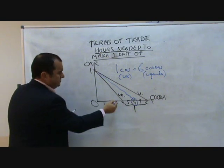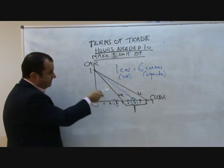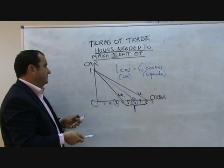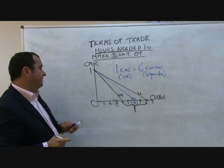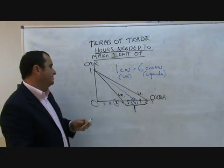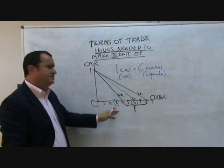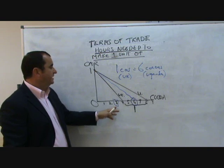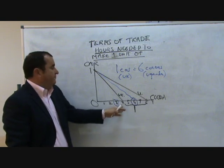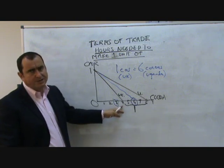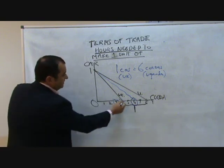If one side wanted the price to be where one car gets only three units of cocoa, that might suit Uganda making cocoa — they'd love to get a car for every three cocos they sell. But Britain wouldn't accept this. Britain would say: we're not giving away one of our cars for just three cocos, because we can make four cocos every time we give up a car ourselves. Why would we export a car for just three cocos? That would be unacceptable to the UK.